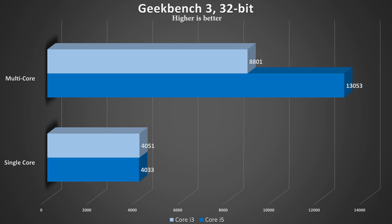On to Geekbench 32-bit. Single-core performance for both of these CPUs was practically identical. The i3 scored 4051 and the i5 scored 4033, so the i3 did edge out a bit of a victory, but they're practically the same for all intents and purposes. This should make sense, though, because they're both based on the exact same 14-nanometer Skylake architecture. So if you're just going to be stressing one core in both CPUs, and those cores happen to be identical in both, you should get pretty close to the exact same score. And Geekbench 3 definitely proved that.